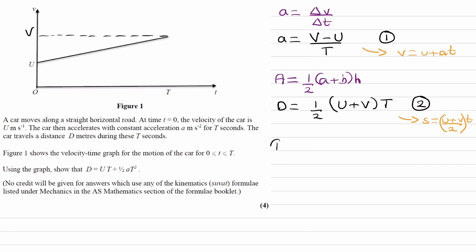So equation 1 then becomes, so rearranging it for V, it would be V is equal to U plus AT. And then put 1 into equation 2, we get D is equal to 1 half, U plus V, V is now U plus AT.